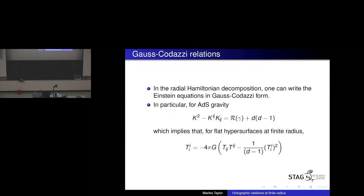If the trace were zero, we'd say we're in a conformal field theory. We've set the hypersurfaces to be flat, so the conformal anomaly contribution is zero. The right-hand side is quadratic in the stress tensor. This looks very much like the relationship I was writing down before: when deforming by a scalar operator with a source, the trace of the stress tensor equals the deformation times the source times the operator. So this expression asks me to identify the quadratic combination of stress tensors as the deforming operator.